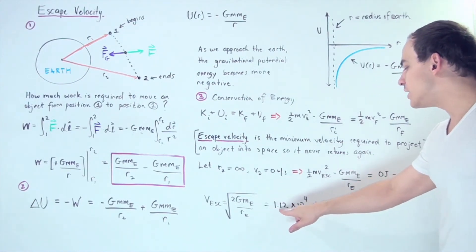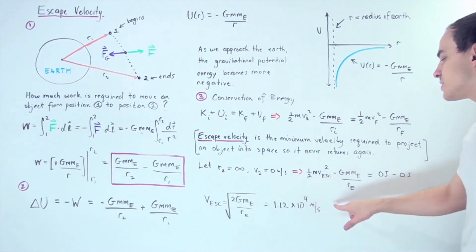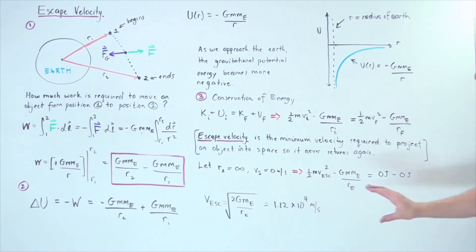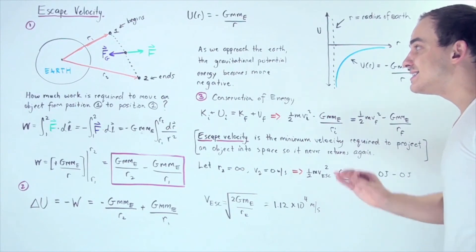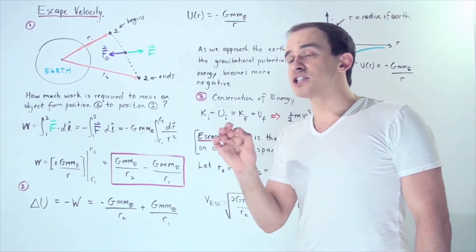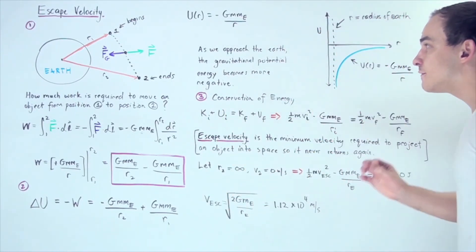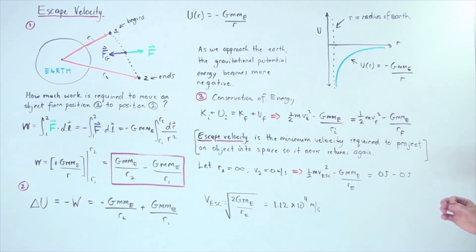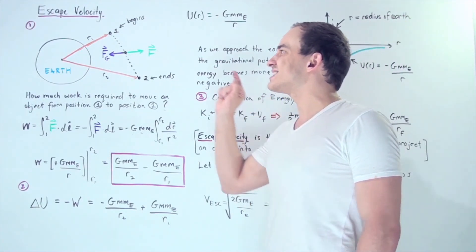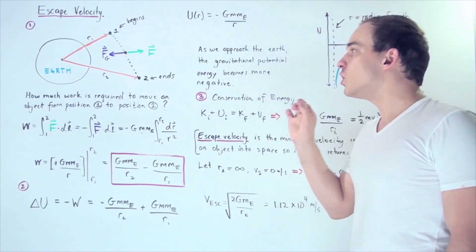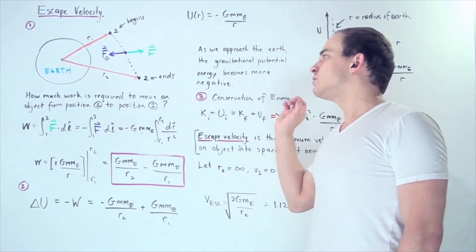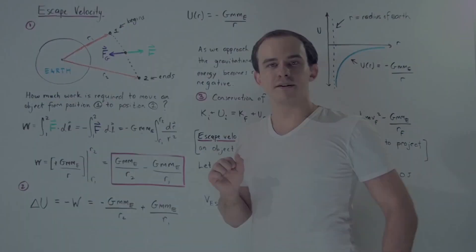Plugging in the values, we get an escape velocity of 1.12 × 10⁴ meters per second. If our object has this velocity and begins at the surface of the Earth, and as long as we neglect any drag force or air resistance, the object will be able to escape into space, escape the gravitational pull of the Earth, and will never return to Earth again.